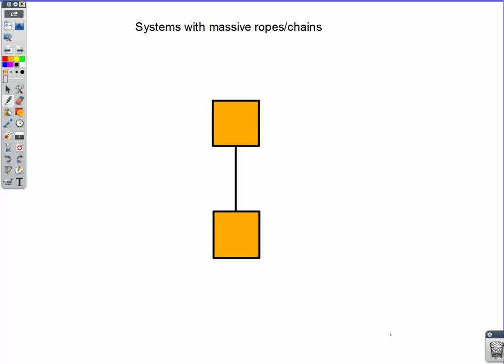Welcome. In this lecture video, we're going to take a look at systems that have massive ropes or chains. Up to this point, the ropes that we've been using have no mass, and we've been using the mantra: same rope, same tension. But when the rope has mass, that is not true anymore.